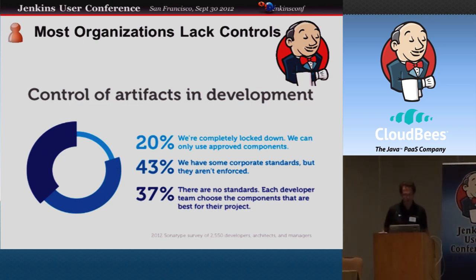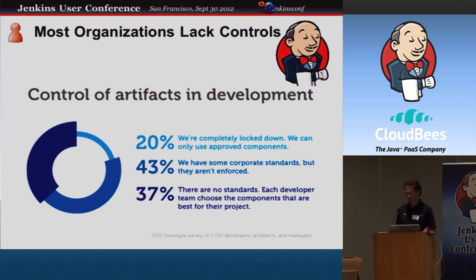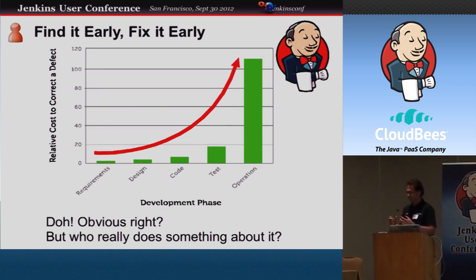Unfortunately, we did a survey earlier this year and found that a lot of companies are looking but have some standards without enforcement — 43% of organizations in a big survey of a few thousand developers said they have a corporate standard but it's not enforced. So it's basically worthless. And then 37% said they don't have any standards at all — they just take whatever and run with it. That might be okay now, but as soon as there's a security issue, you might run into trouble. We all know that finding and fixing issues early is the cheap way to go about it.